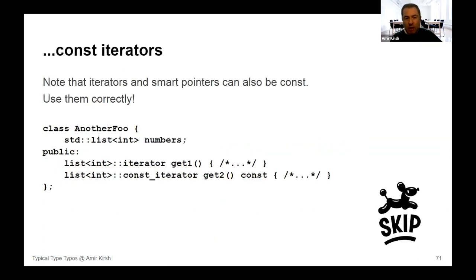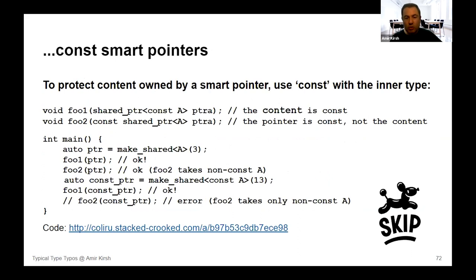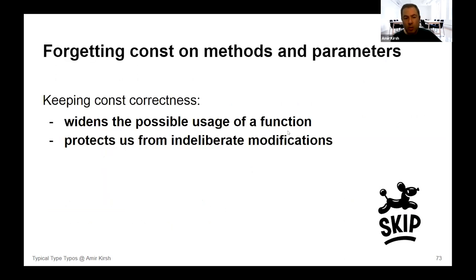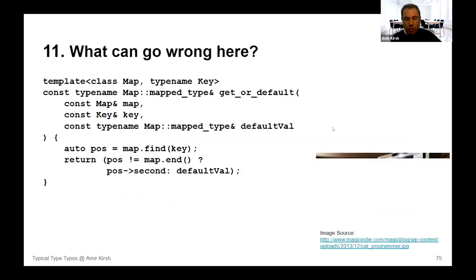We will skip const iterators. Be concerned about const iterators and const smart pointers — make sure you put const in the right place. Usually you want a shared_ptr<const T> (immutable content) rather than a const shared_ptr<T> (immovable pointer, mutable content). Keeping const correctness is important: it widens possible usage of functions and protects from unintended modifications.